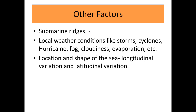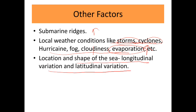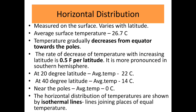Other factors include submarine ridges, where upwelling takes place, which affects ocean temperature. Local weather conditions like storms, cyclones, hurricanes, fog, and cloudiness also affect temperature. More evaporation means more temperature loss. Cloudiness reduces insolation received from the sun, affecting ocean temperature. Cyclones and storms with high-velocity winds cause the ocean surface to lose a lot of energy to those events. Location and shape of the sea, and both longitudinal and latitudinal variation, all affect oceanic temperature.